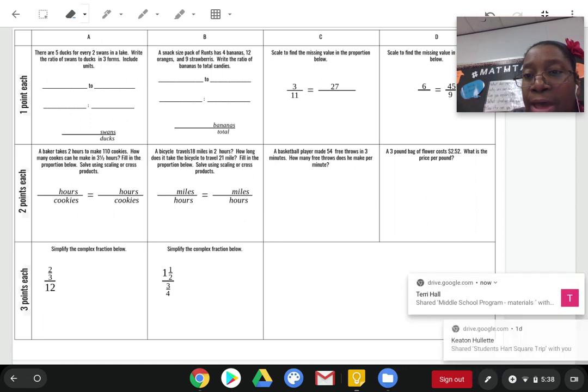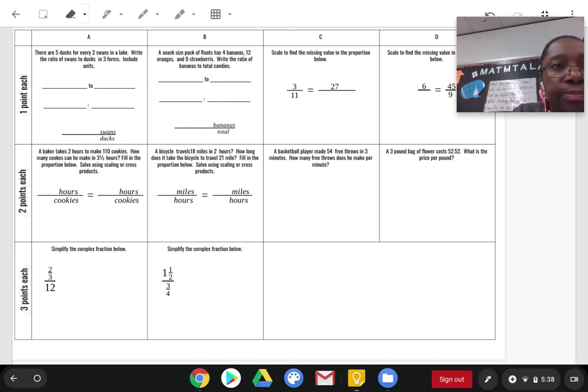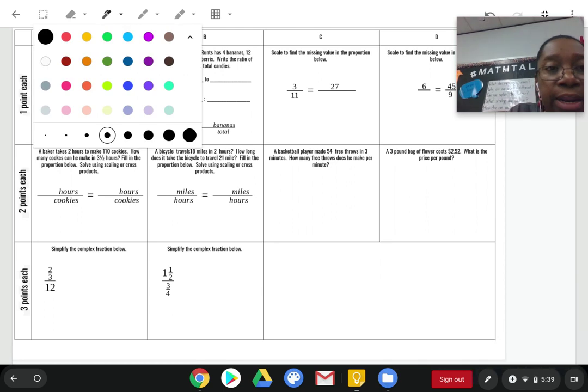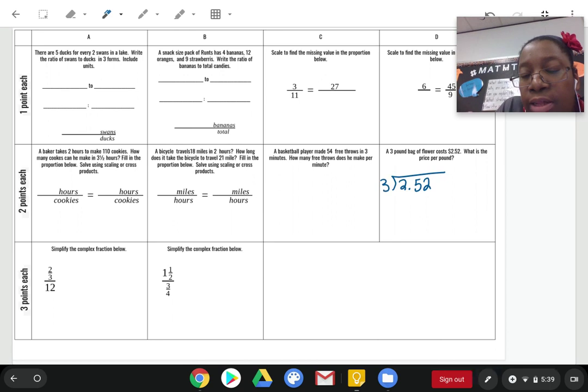The next problem says, a 3 pound bag of flour costs $2.52. What is the price per pound? Again, that's just asking for a unit rate. And to find a unit rate, we're going to have to do a little bit of division. The unit rate, remember, is a rate for denominator of 1. So, we are going to have to do some division. And I'm going to put the $2.52 on the inside. And the 3 on the outside.